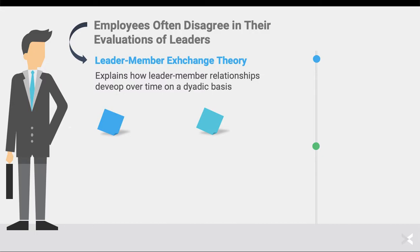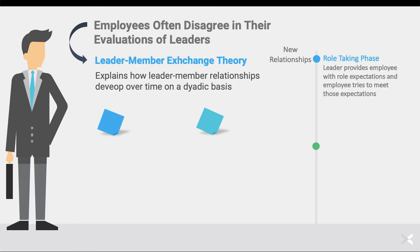There are two stages involved in leader-member exchange theory. The first stage is when a leader starts to form new relationships with followers — this might be when a new leader or manager comes into the workplace and must form new relationships with existing employees, or when a new employee is hired and they are navigating a new relationship. At the beginning of the relationship, this is called the role-taking phase. In the role-taking phase, the leader provides the employee with role expectations and the employee then tries to meet those expectations.